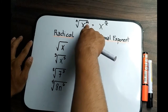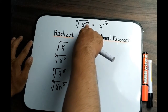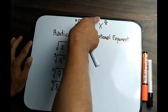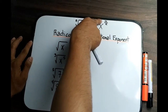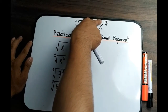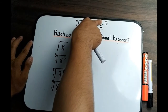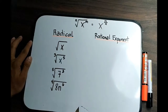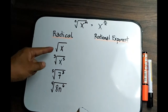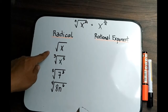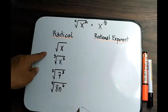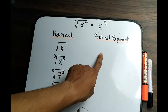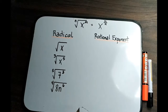The variable m is the exponent of your radicand, while on the other side, the variable m is the numerator of your rational exponent. I have four different examples to work with, converting from radical to rational exponents. Let's start.